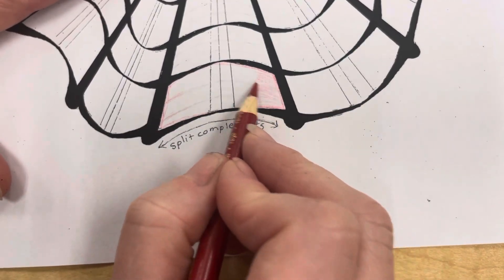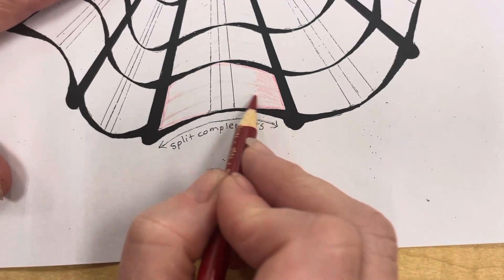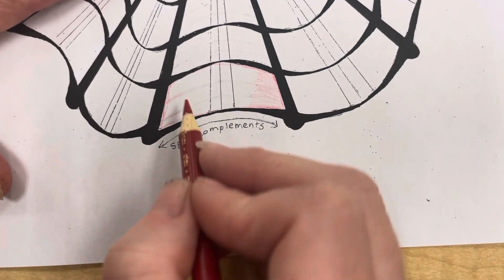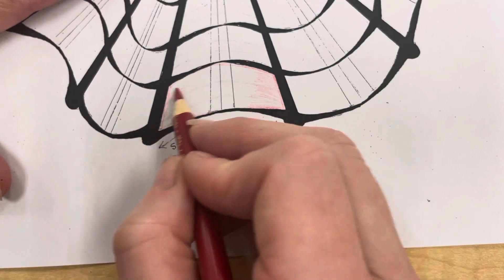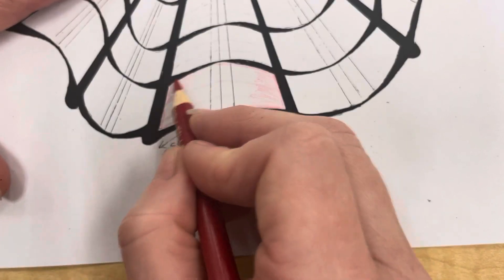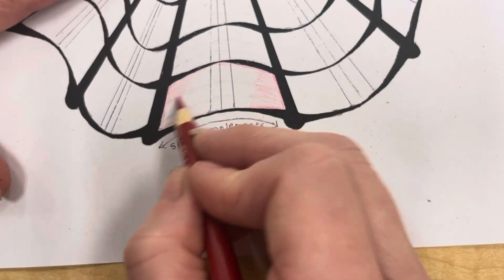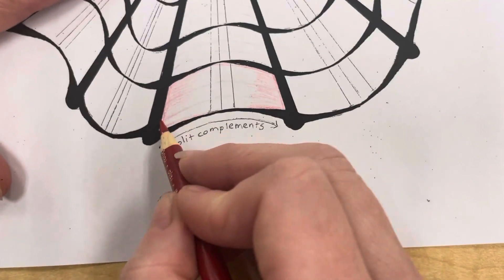You could even make a mark where your guidelines were. That's actually probably a smart idea. Make a little mark where your guidelines were, and so you could take it and fill in your lines.